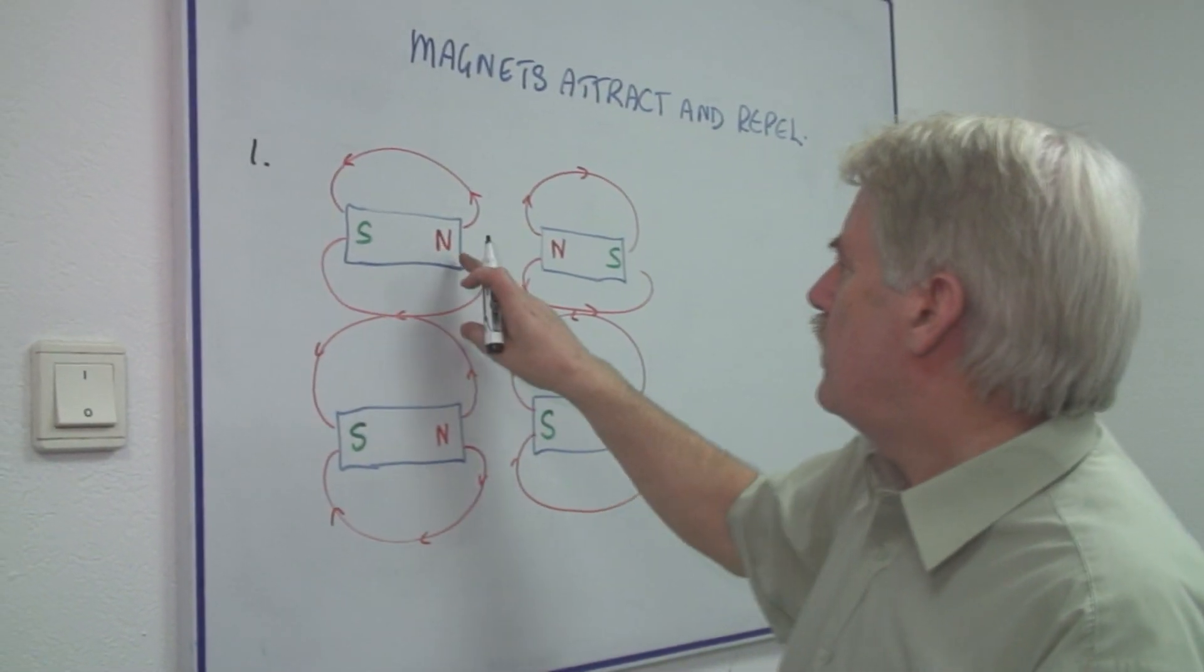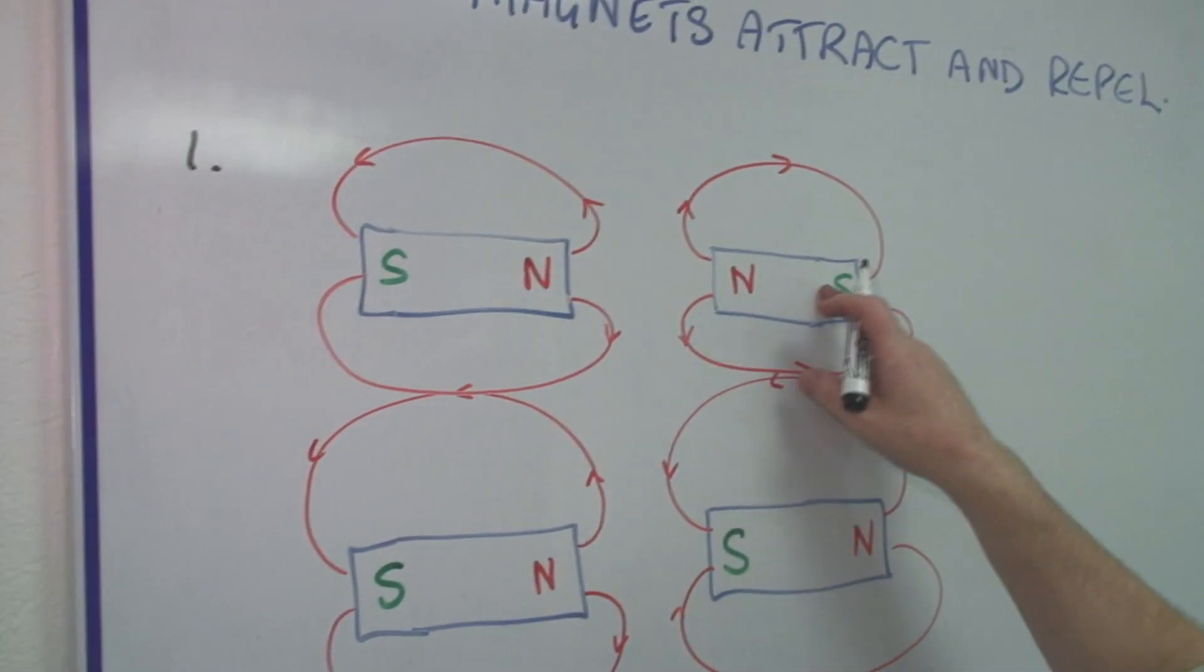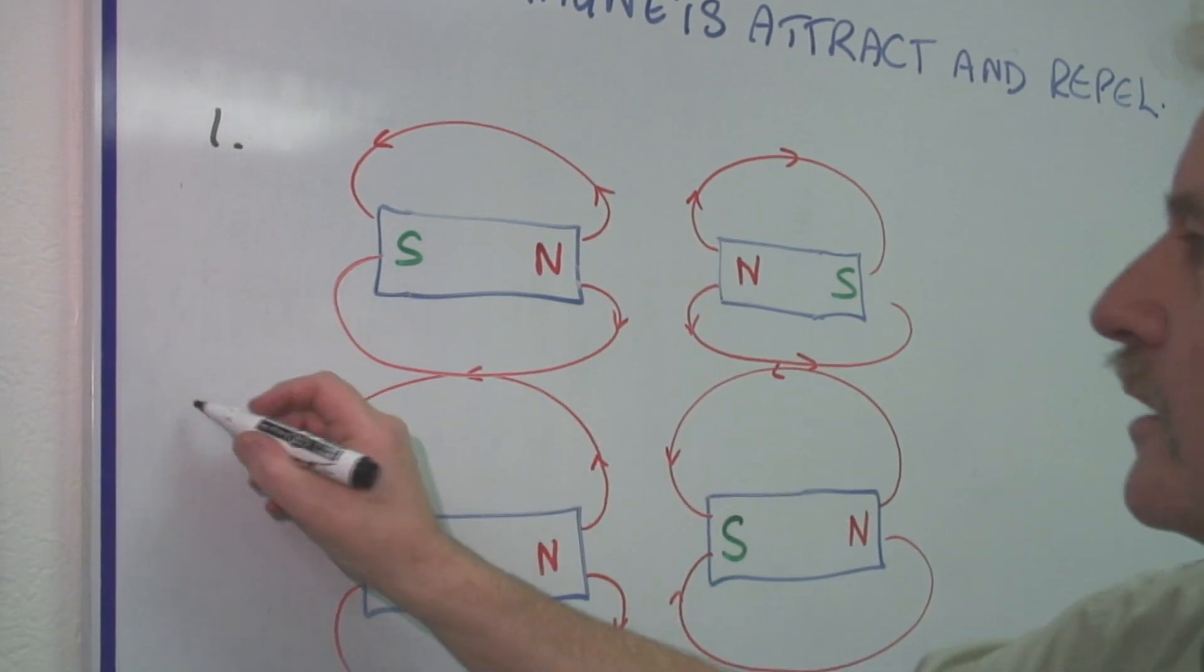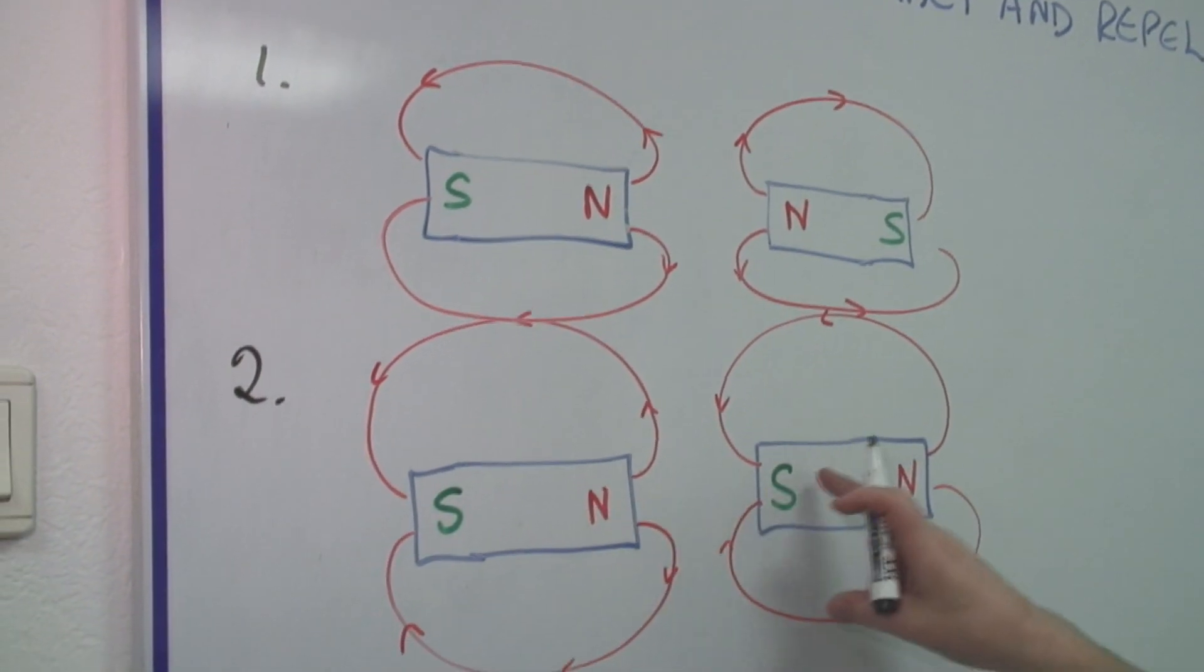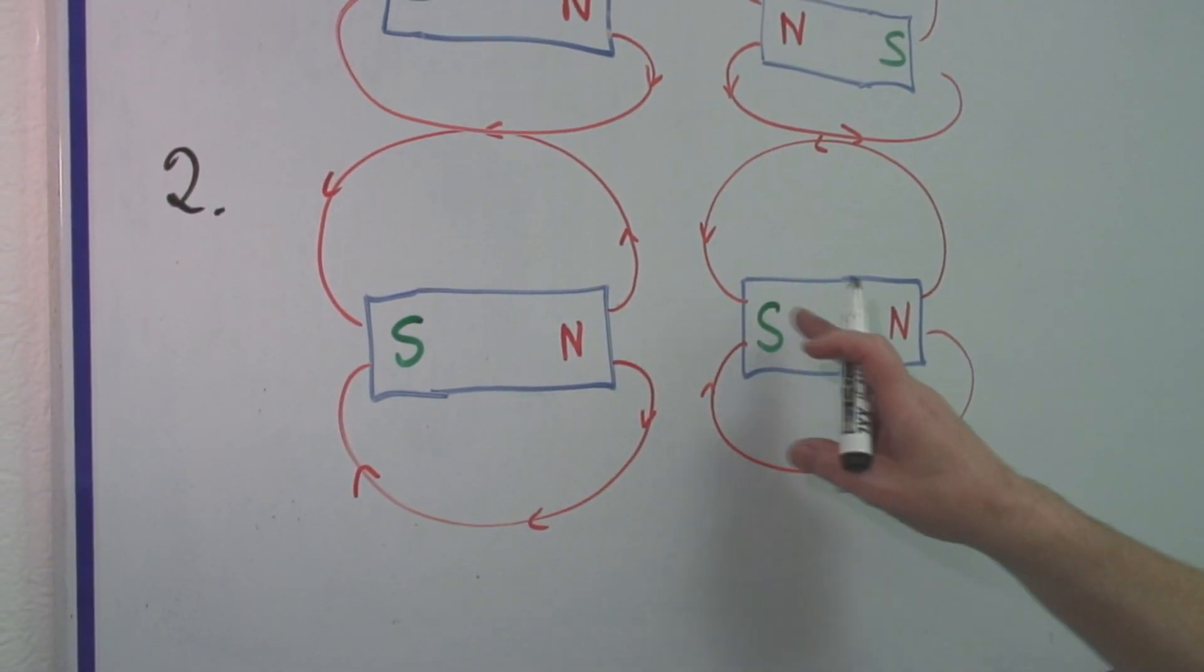The first one, where we've got two bar magnets, each with the North and the South Pole, but the two North Poles are close together. The second, here we've got the same two bar magnets, but this time the North Pole and the South Pole are closest.